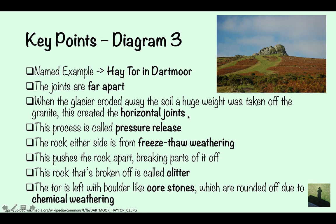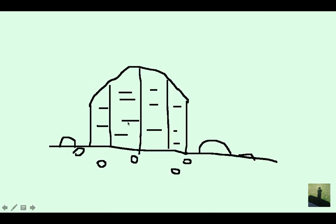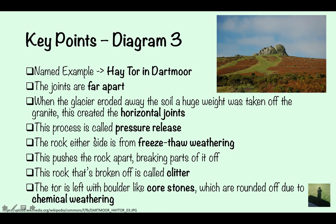So when the glacier is eroded away, the soil, a huge weight is being taken off the granite. And this has created vertical joints, as you can see here. There's a lot more vertical joints than there were beforehand.